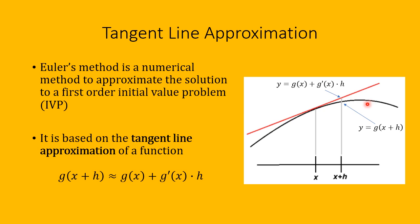Here's a picture illustrating the situation. Suppose that this black curve is y equals g of x. At some fixed number x, we look at a point on the curve and consider the tangent line at that point. Suppose you want to approximate the value of g of x plus h. Instead of using the original function g, we could approximate that by using this tangent line instead.